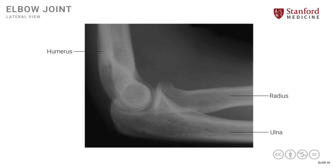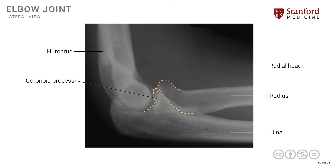Let's look at those bony prominences again. The coronoid process is part of the proximal end of the ulna, and we can see how it articulates with the distal end of the humerus. The radial head is also seen here at the proximal end of the radius, also articulating with the distal humerus. Note that in this lateral view the coronoid process and the radial head overlap to some extent, and much of the radial head appears hidden behind the coronoid process.